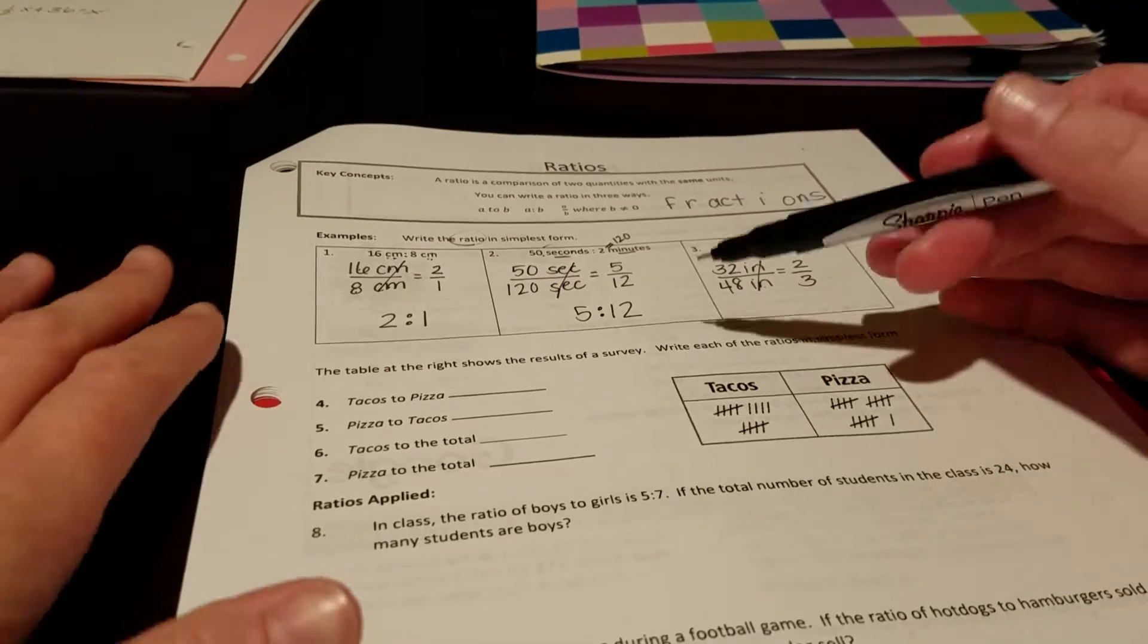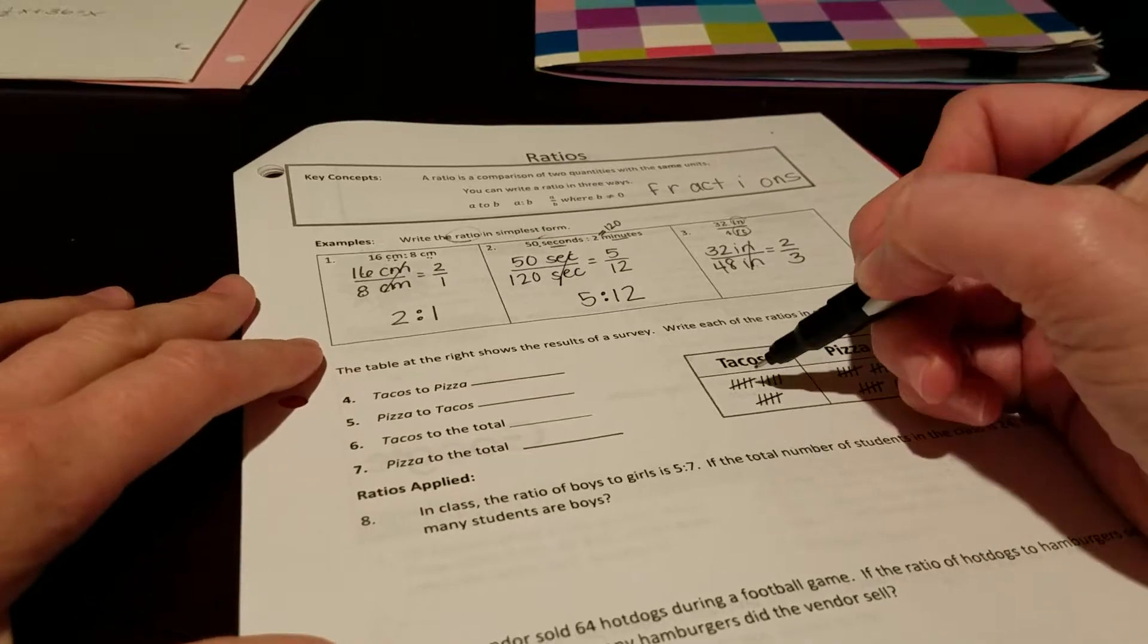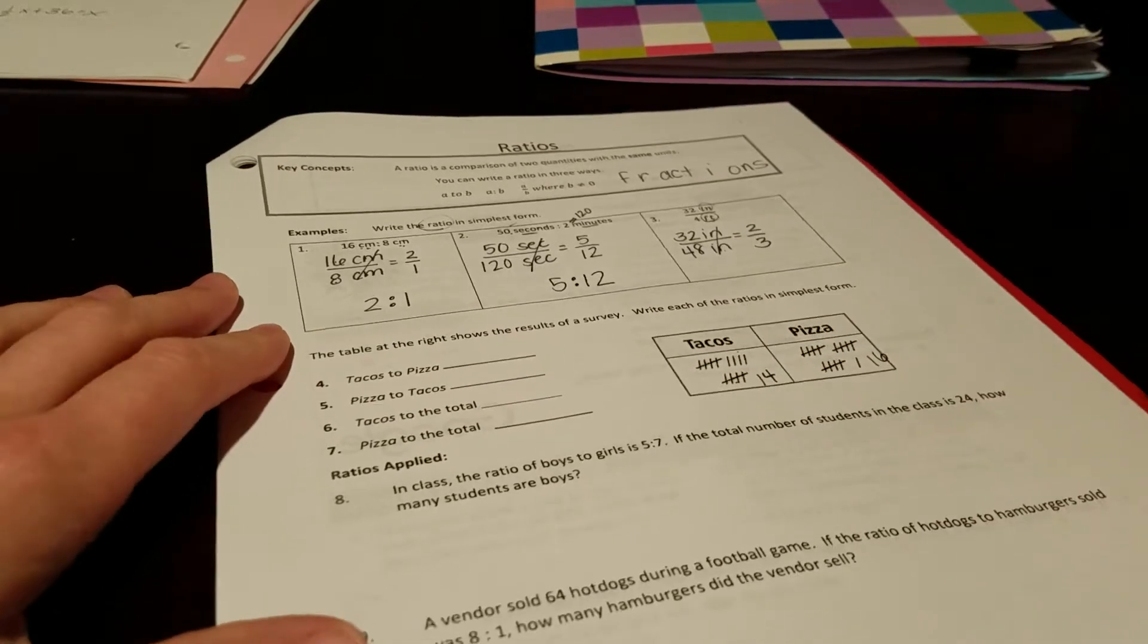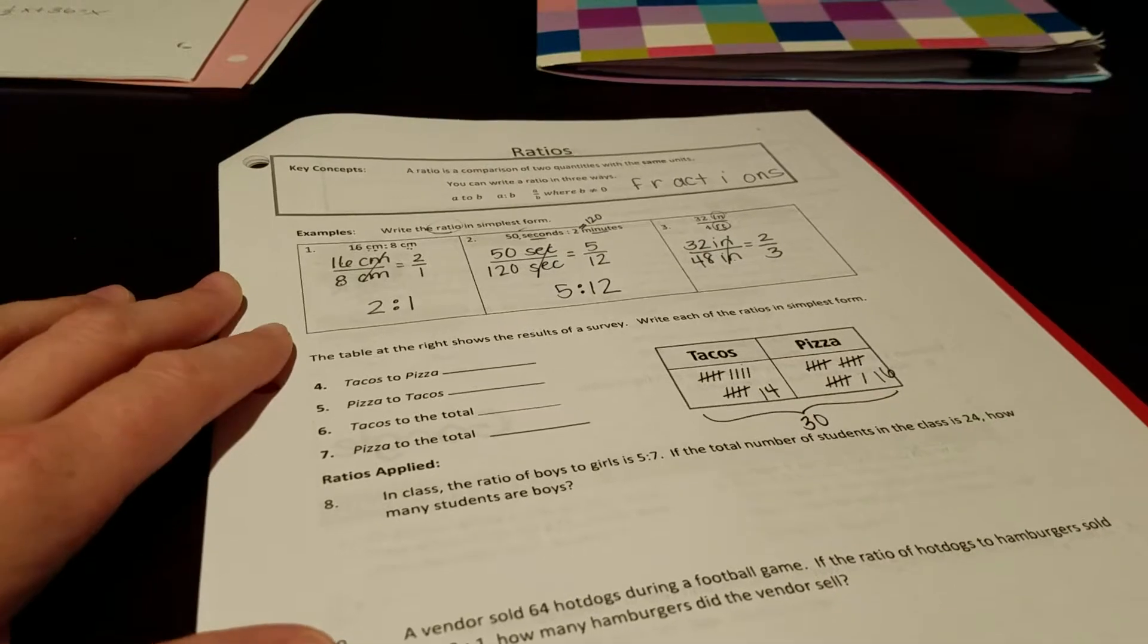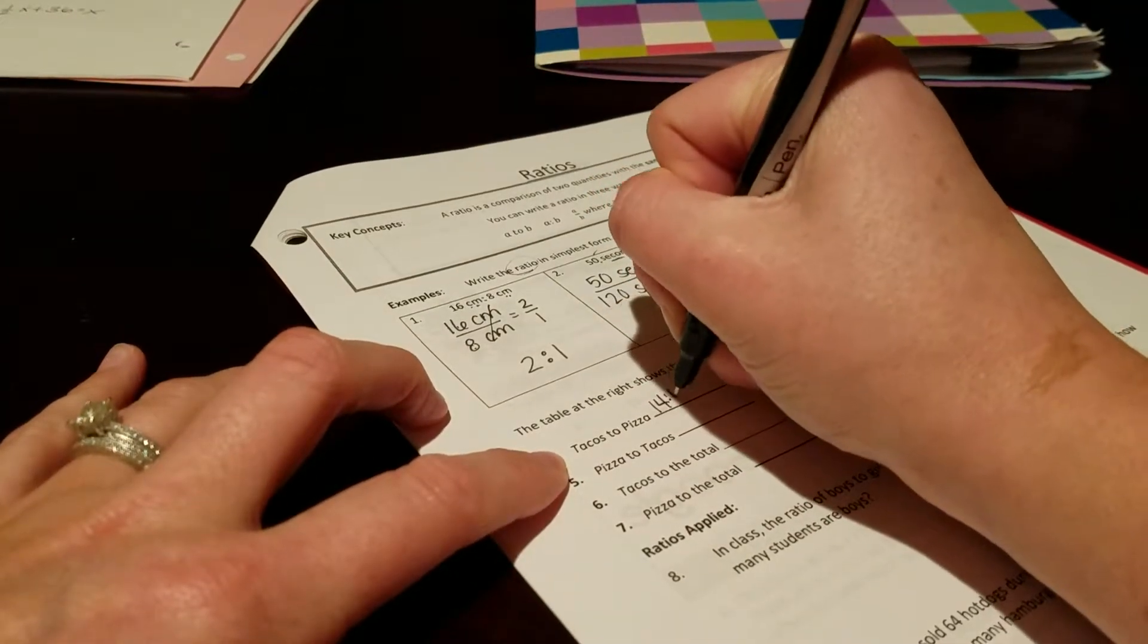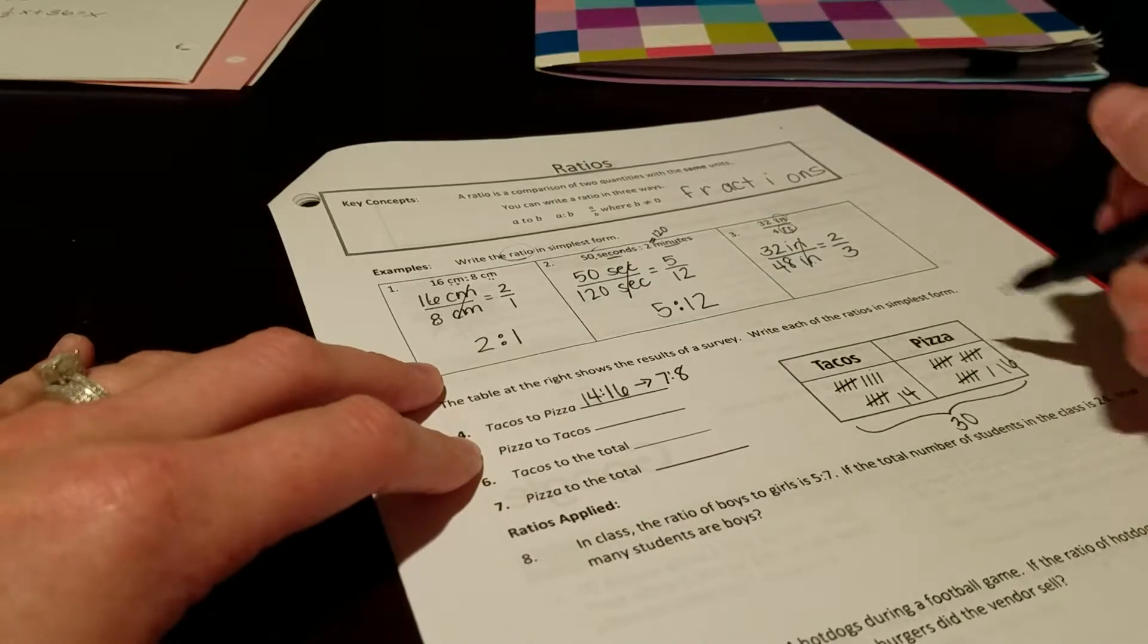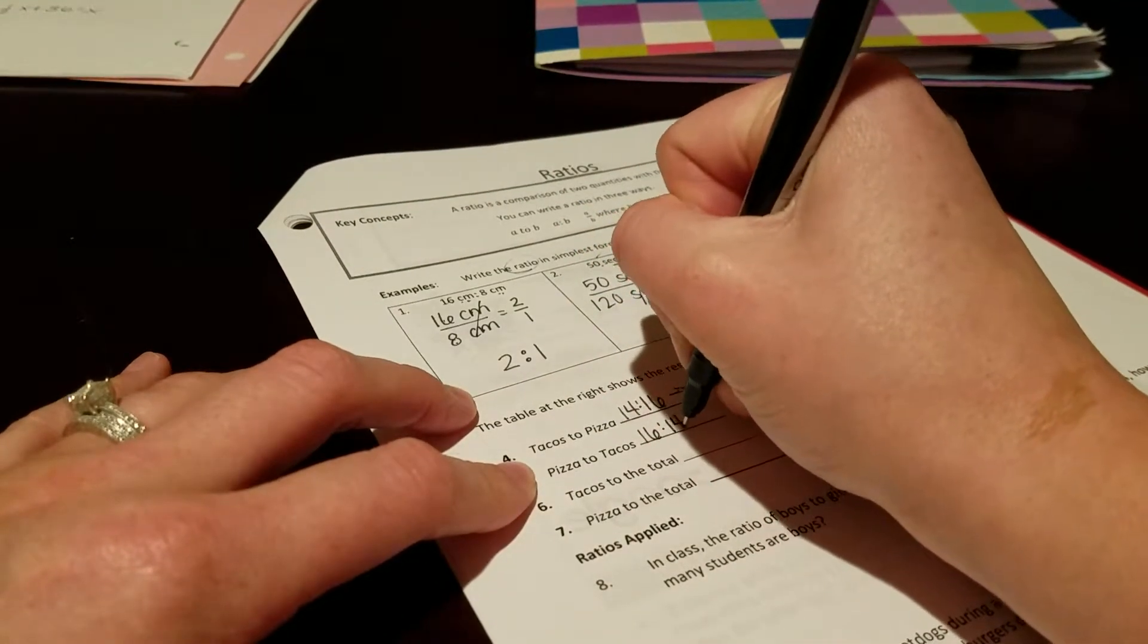So down here, table at the right shows the results of the survey. Write each ratio in simplest form. So tacos, it looks like there were 14 responses. To pizza, which had 16 responses. So if you're thinking total, we have 30 responses here. So tacos to pizza, so 14 to 16. And we can simplify that to be 7 to 8. If I switch it around to pizza to tacos, I have 16 to 14, which would just be 8 to 7.